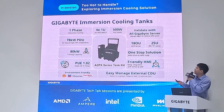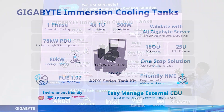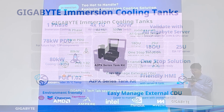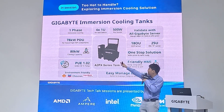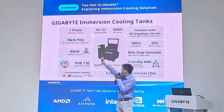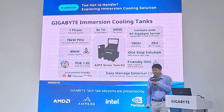This is the GIGABYTE immersion cooling tank. We have two types: the first is the OCP type, supporting 18U for OCP servers, and the other is a 25U EIA 90-inch type supporting EIA 90-inch servers. Cooling capacity is 80 kilowatts, and PUE is 1.02 with 35-degree warm water temperature. There is a friendly HMI to monitor tank status. Servers are immersed inside, while four 1U switches for air cooling and the CTU are placed outside for easy management.